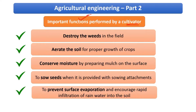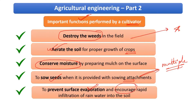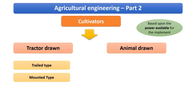The important functions performed by a cultivator include: destroying weeds in the field (its primary function), aerating the soil for proper crop growth, conserving moisture by preparing mulch on the surface, sowing seeds when provided with a sowing attachment, preventing surface evaporation, and encouraging rapid infiltration of rainwater into the soil. Due to these advantages, cultivators are very prominent and widely used.